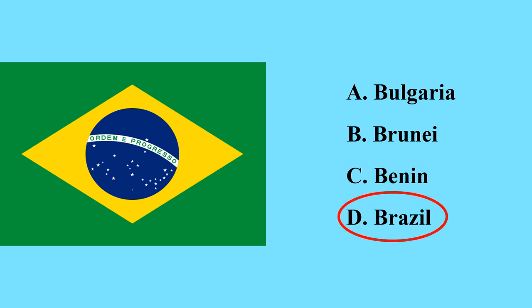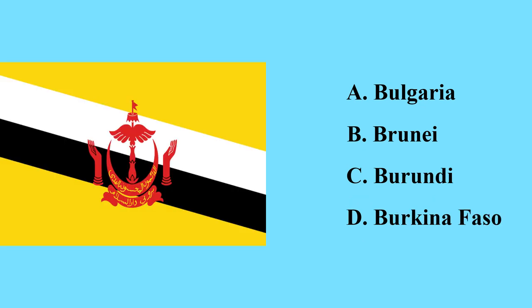Brazil is the largest country in South America and is famous for football — world football stars are from Brazil like Ronaldo. This flag belongs to a country called Brunei in the Pacific Asian region — it is a small country.